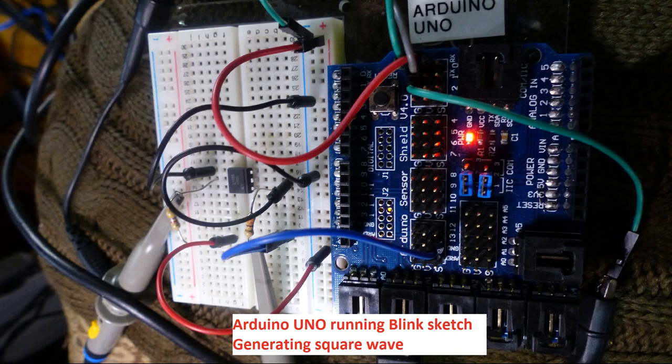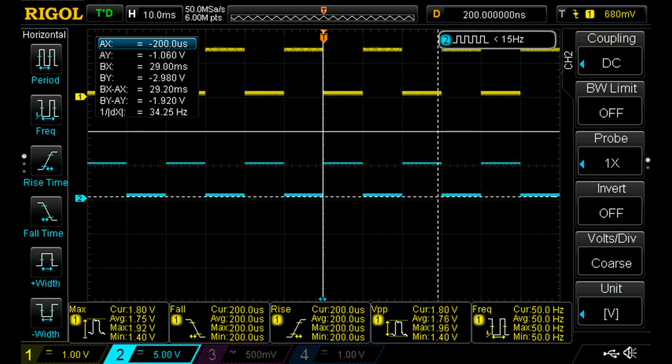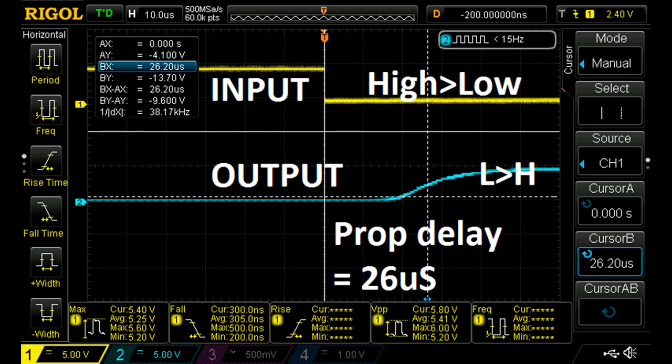We're going to use an Arduino Uno running the blink sketch with the blinks speeded up and generating a square wave output. The square wave that we're going to use is high for 10 milliseconds and low for 10 milliseconds for a cycle time of 20 milliseconds.